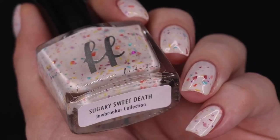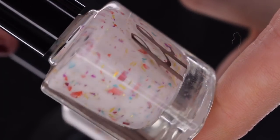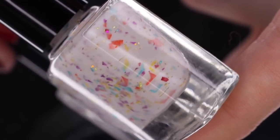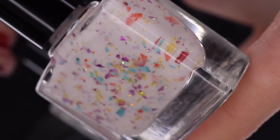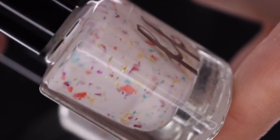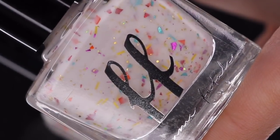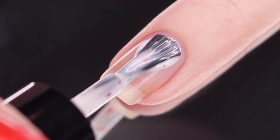I'm going to start with my very favorite. This is Sugary Sweet Death. It will retail for $12 Australian dollars. This one is described as a creamy white base filled with multicolored glitter shreds. It's opaque in three to four coats, and you may require just a little bit of fishing or glitter placement. I'm going to show you how it swatched today for me on my natural nail.